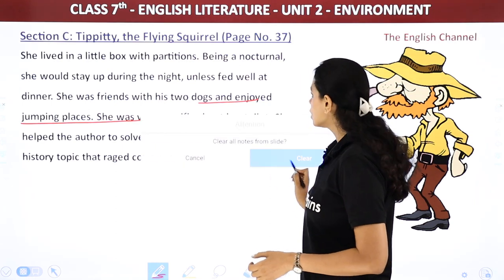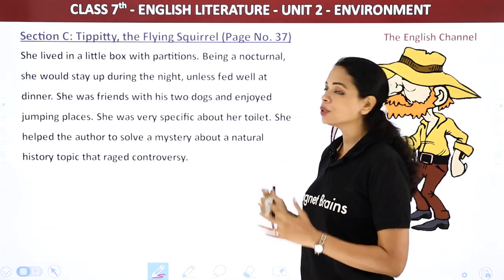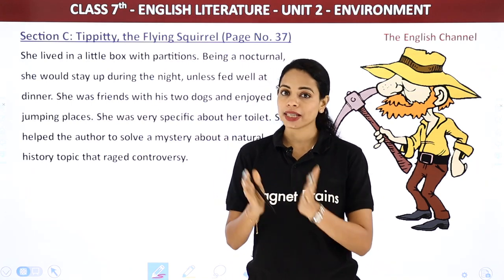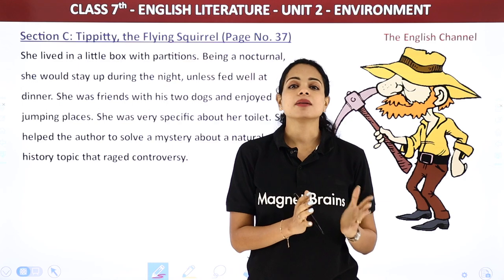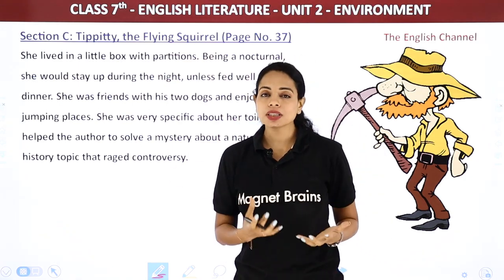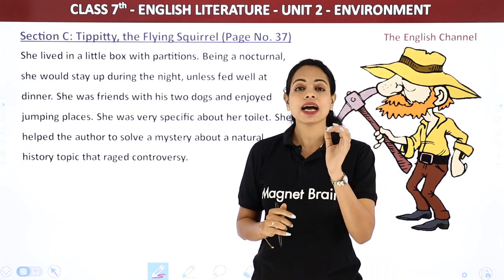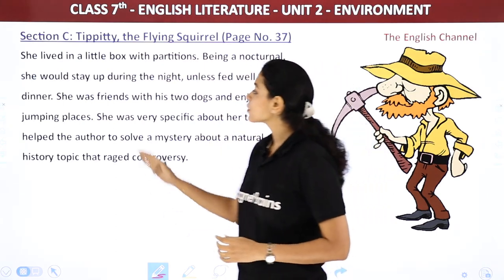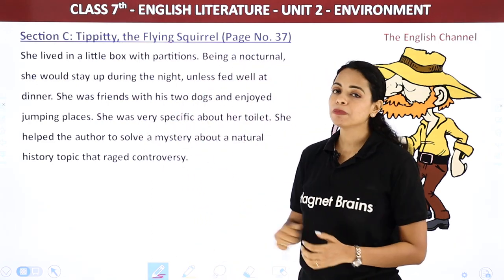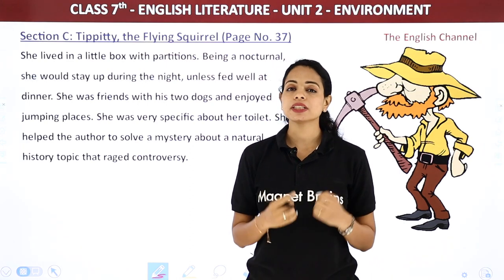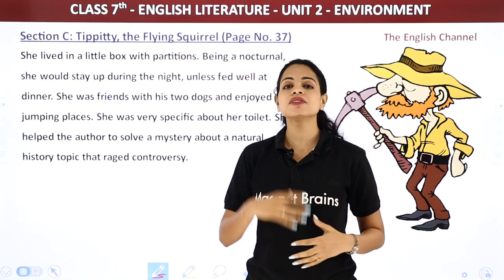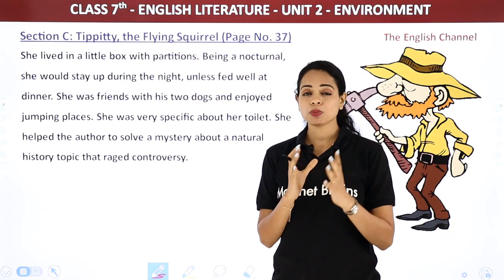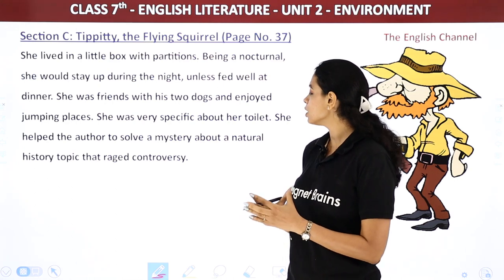She lived in a little box with partitions. Being a nocturnal animal, she would stay up during the night unless fed well at dinner — she used to sleep well till the early hours of the morning only if fed well. She was friends with the author's two dogs, Don and Brock, and enjoyed jumping around. She was very specific about her toilet.